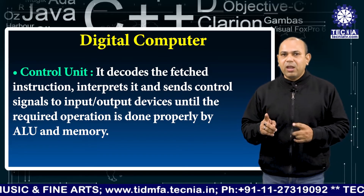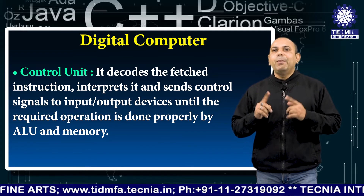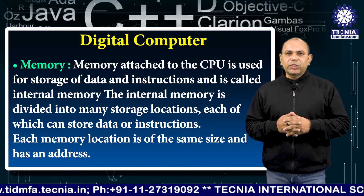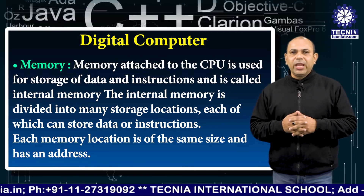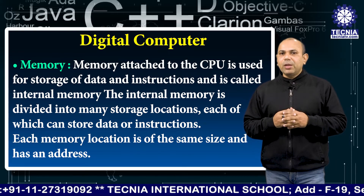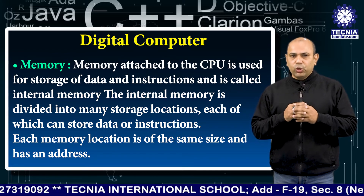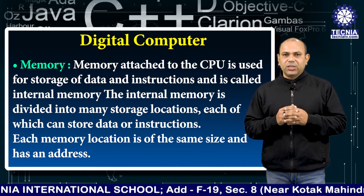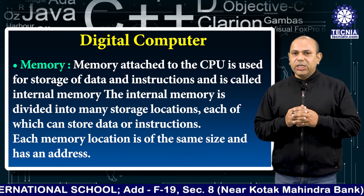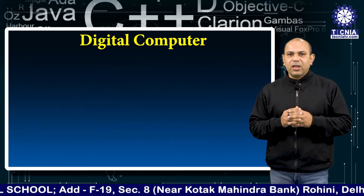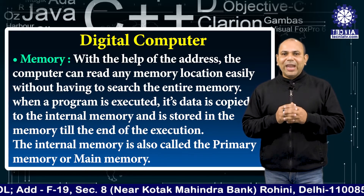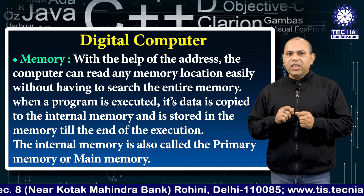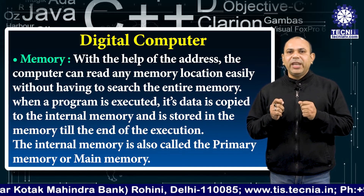Memory attached to the CPU is used for storage of data and instructions and is called internal memory. The internal memory is divided into many storage locations, each of which can store data or instructions. Each memory location is of the same size and has an address, and with the help of the address the computer can read any memory location easily without having to search the entire memory.